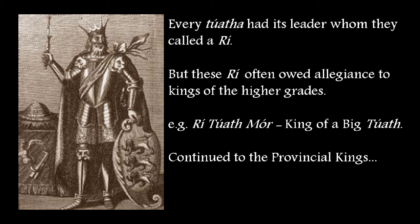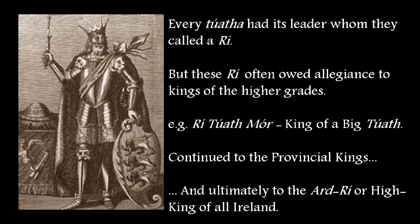A final over-king was usually selected by the courts of the provincial kings. This king of kings would traditionally rule from the province of Meath, and the high kingship of Ireland bears particular significance to the hill of Tara in modern day County Meath, otherwise known as Teamhair na Ríogh, or Tara of the Kings.